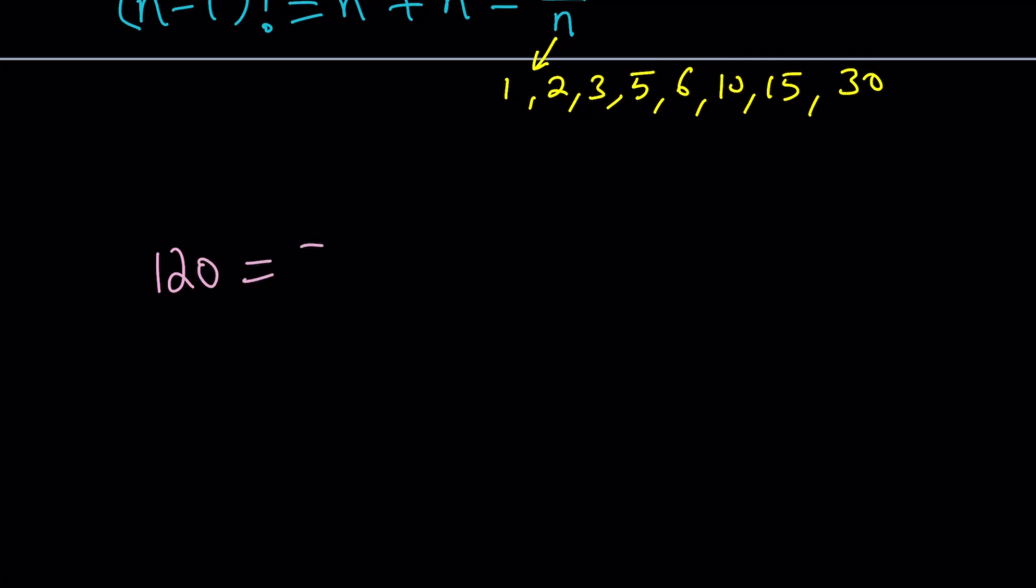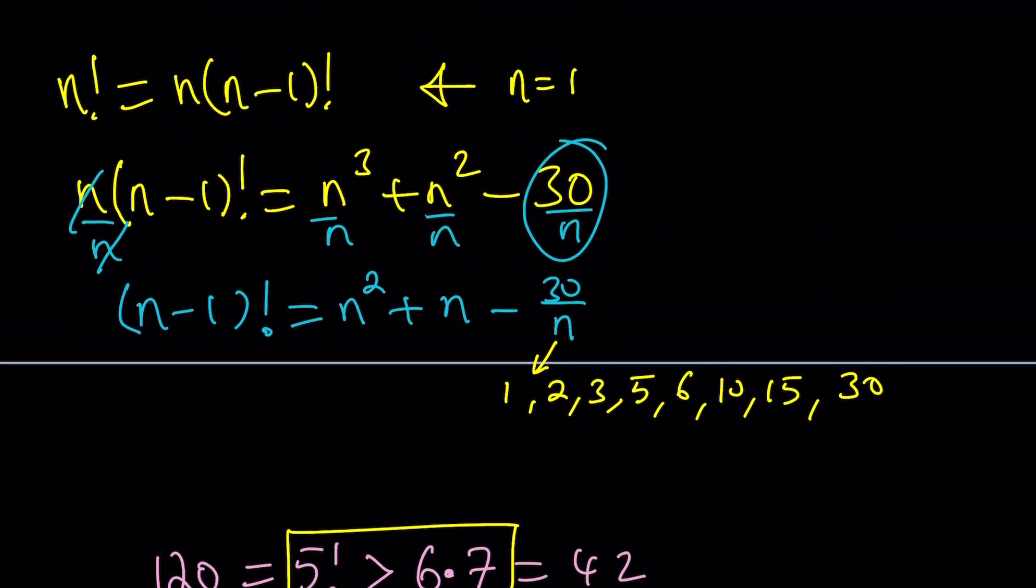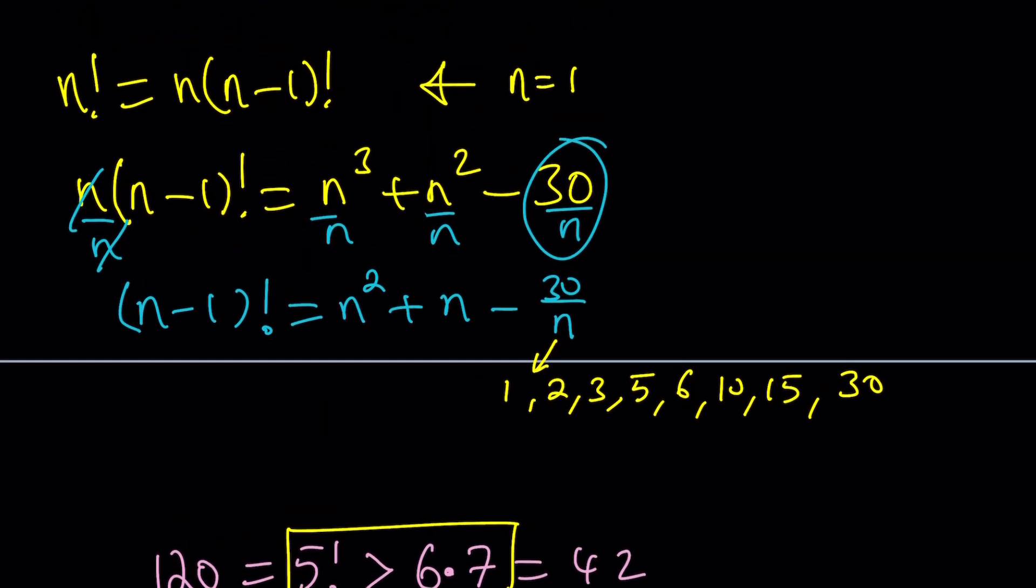So it shouldn't be coming as a surprise if I tell you that 120 is 5 factorial. And 5 factorial is definitely greater than 6 times 7, which is equal to 42. And you might be like, why are you comparing 120 and 42? It's almost like three times bigger. That's not a problem. This is what we need. Now, notice that this is the inequality I was trying to get. And how is this related to our problem? You'll see in a bit.